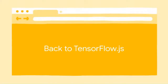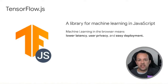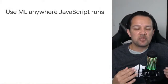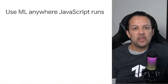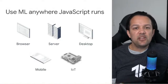Back to TensorFlow.js. Now that we understand what's going on behind the scenes, TensorFlow.js does a lot of the hard stuff for us. TensorFlow.js is a machine learning library written for JavaScript. Doing machine learning in the browser has several advantages: lower latency as no server is involved, user privacy as the data stays on device, and super easy deployment because anyone with a web browser can use it. That means you can use machine learning anywhere JavaScript can run — web browser, server side, desktop, mobile, and even IoT devices.